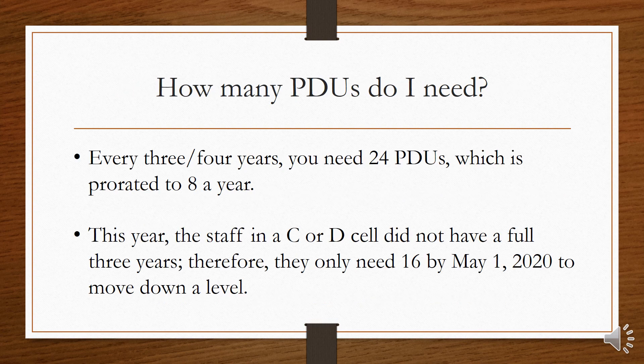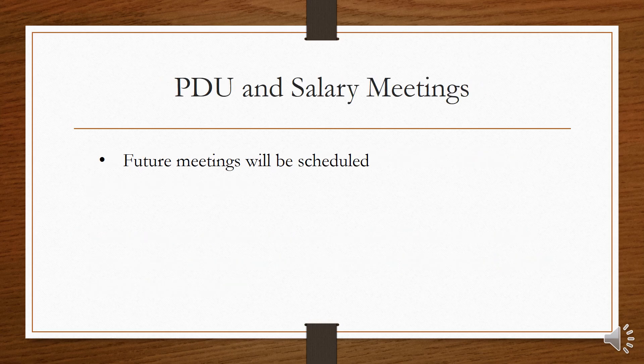Every three years, you need 24 PDUs, which is prorated to about eight a year. This year, the staff in a C or D cell did not have a full three years. Therefore, they only need 16 by May 1, 2020 to move down a level. There will be meetings scheduled in the near future to help answer any questions you might have.